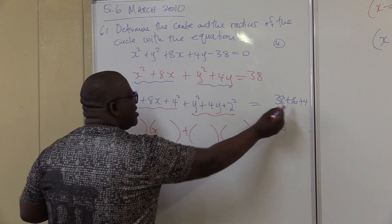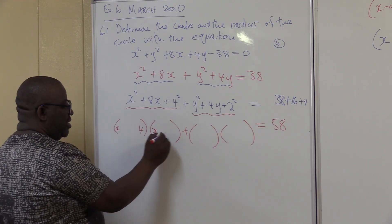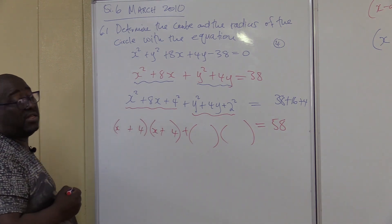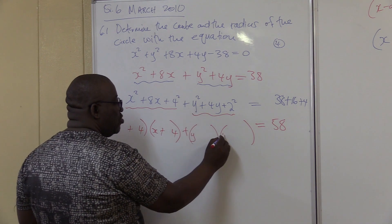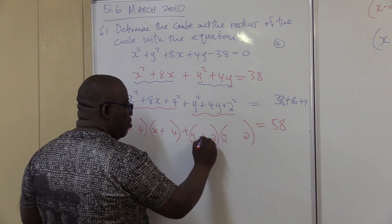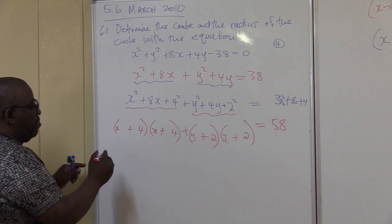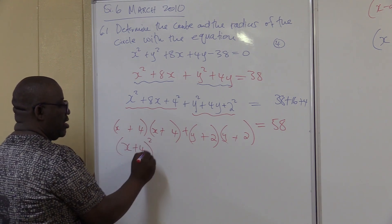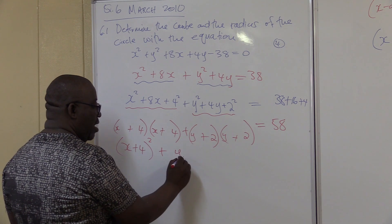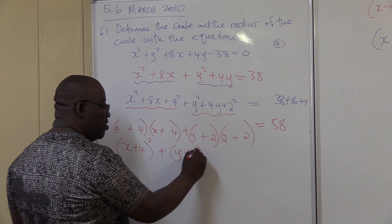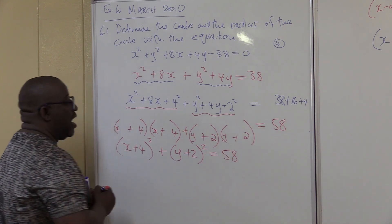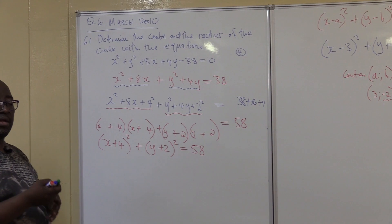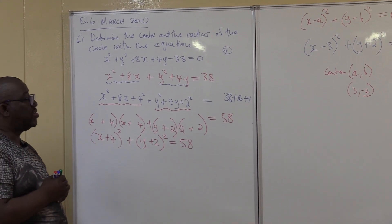The factors for x: both plus, giving (x+4) squared. The factors for y: half coefficient was 2, both plus, giving (y+2) squared. Let's clean it up: x plus 4, all squared, plus y plus 2, all squared, equals 58. It is now in my standard form: x minus a, all squared, plus y minus b, all squared, equals r squared. I can now see the coordinates of the center.